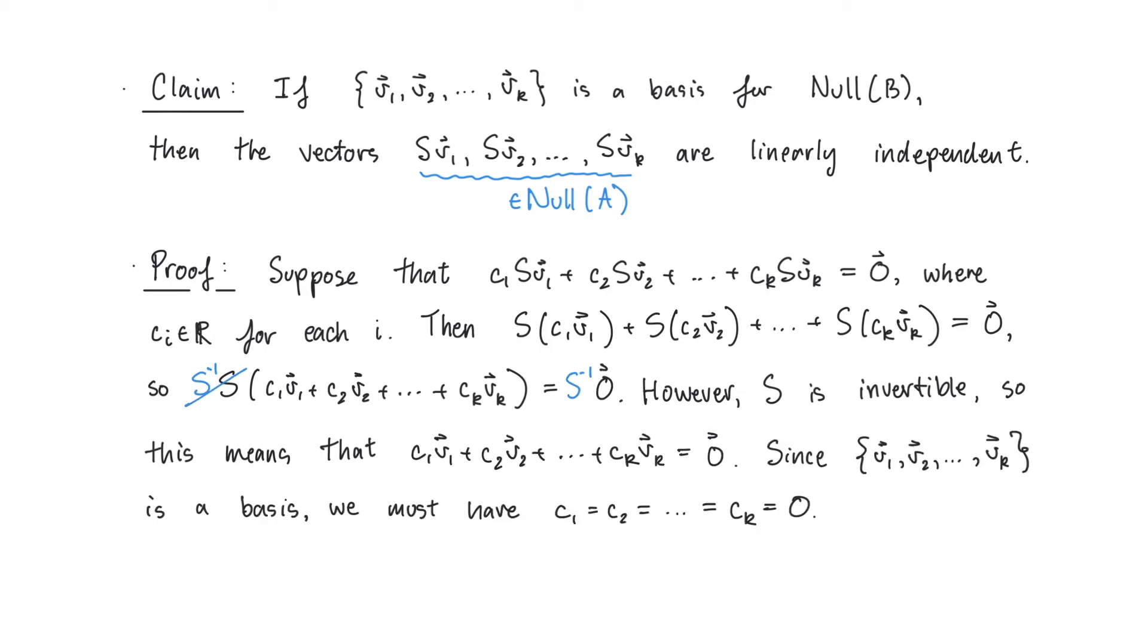Since V1, V2, all the way up to Vk are linearly independent, the only way that this can happen is if C1, C2, all the way up to Ck are all 0. In other words, we've just proven that S times V1, S times V2, all the way up to S times Vk are linearly independent.